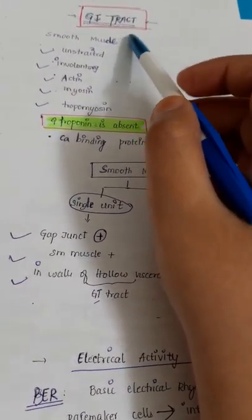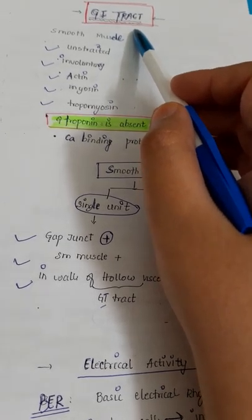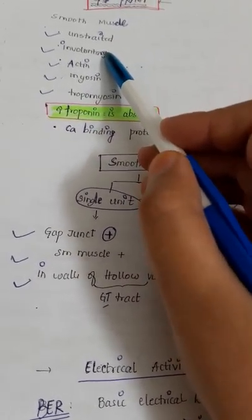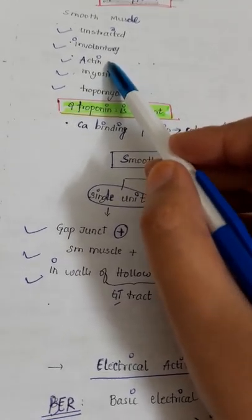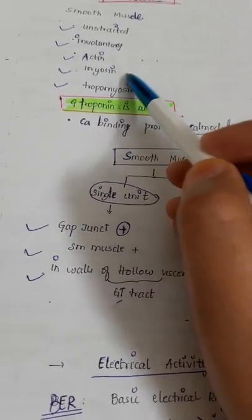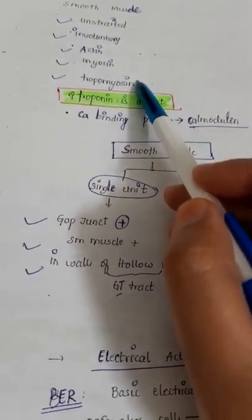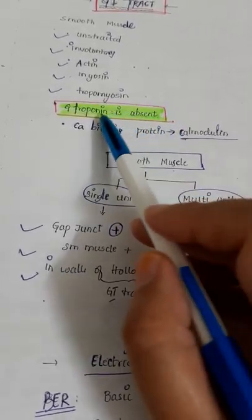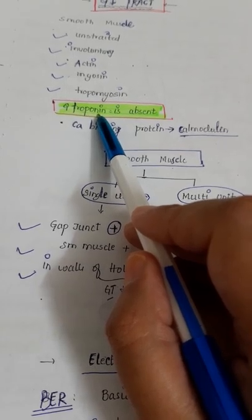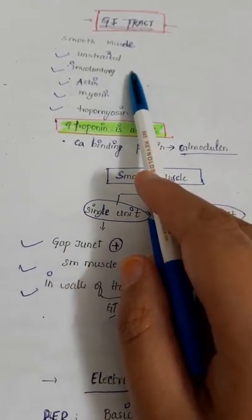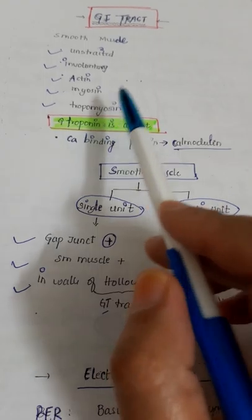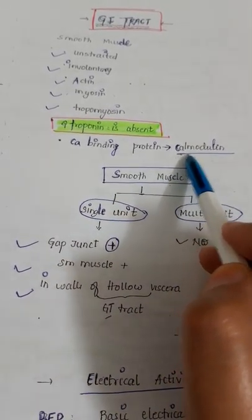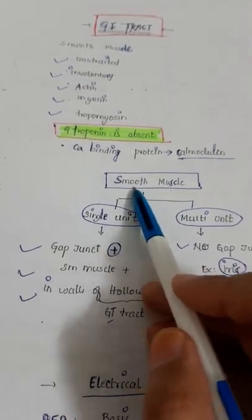Let's start with the GI tract. In the GI tract we have smooth muscles. They are unstriated and involuntary. We do have protein actin, protein myosin, and protein tropomyosin. What is absent over there? It's troponin. Troponin is absent in GI tract while actin, myosin, and tropomyosin are present. We have another calcium binding protein over there which is calmodulin.